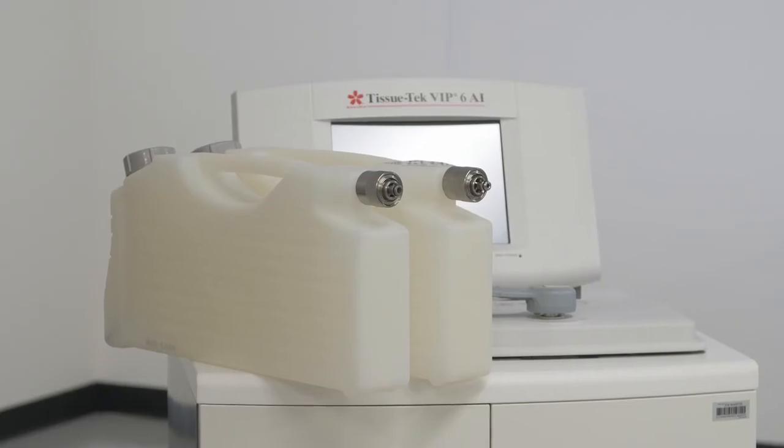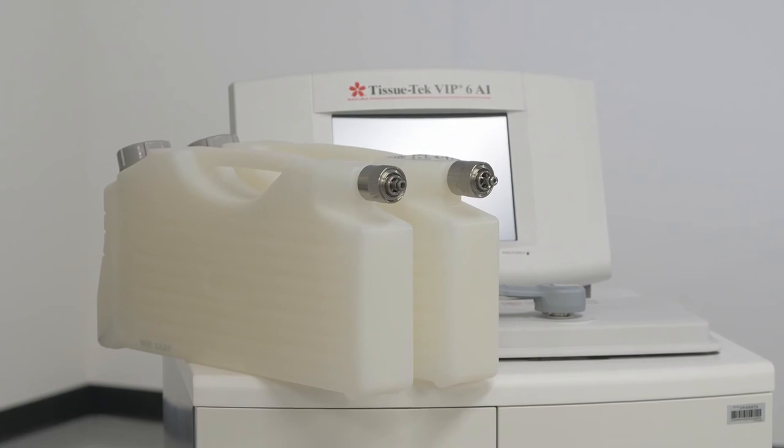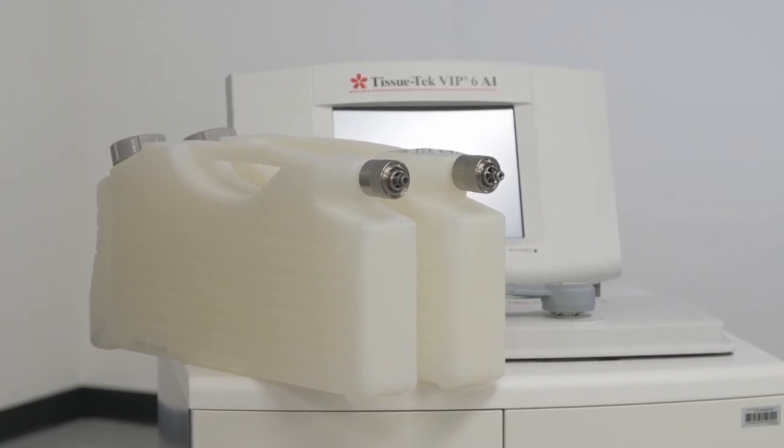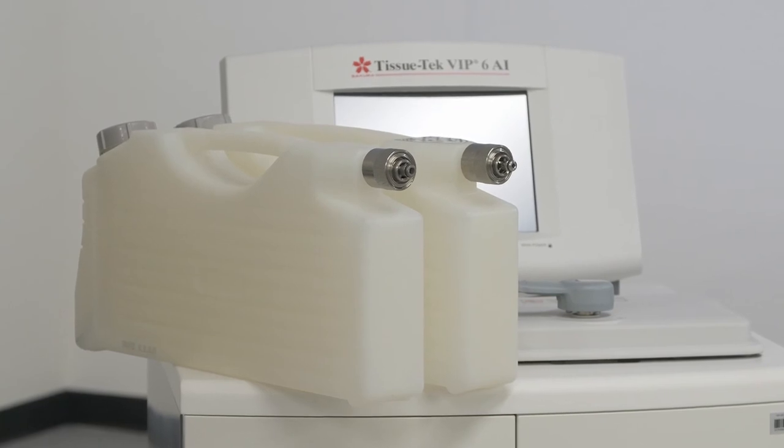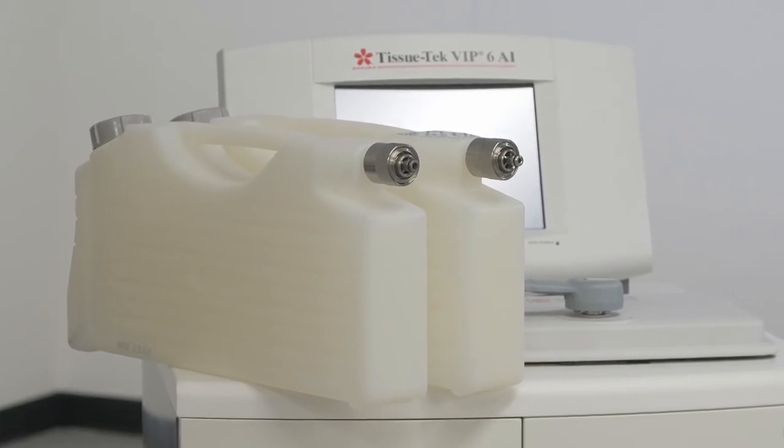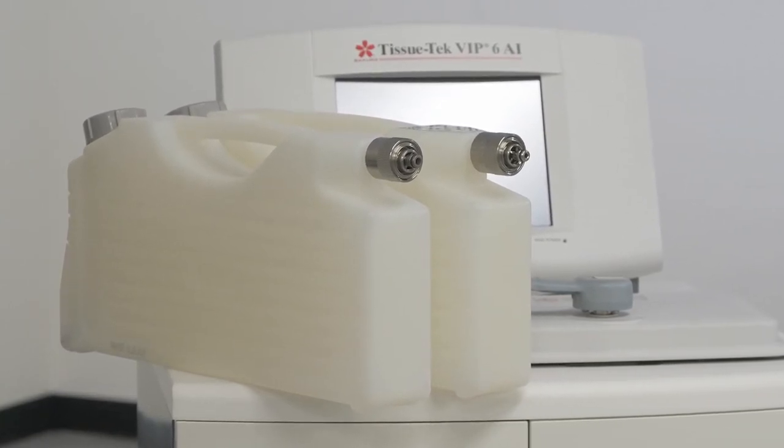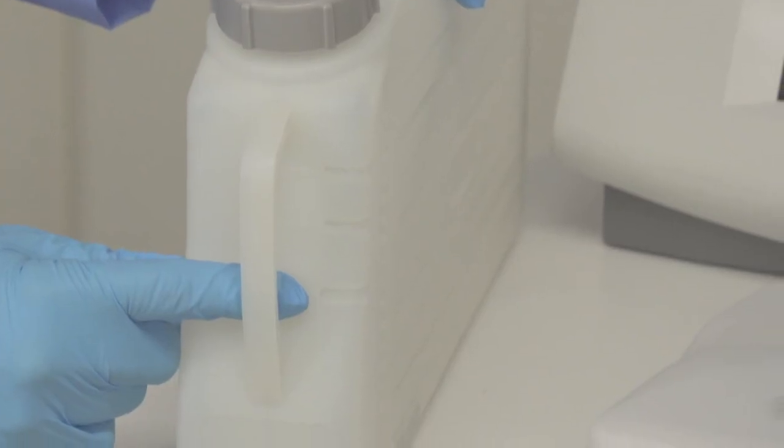The plastic bottles themselves are all the same. Our containers have several markings to help you fill with reagent. The sides of the containers are marked every 200 milliliters. The front of the containers have three level markings to make it easier to visualize when placed inside the processor.